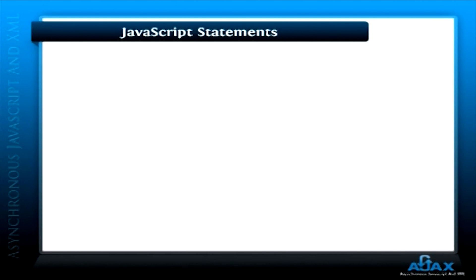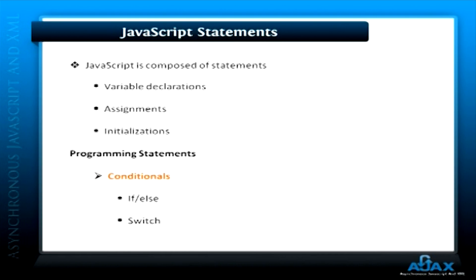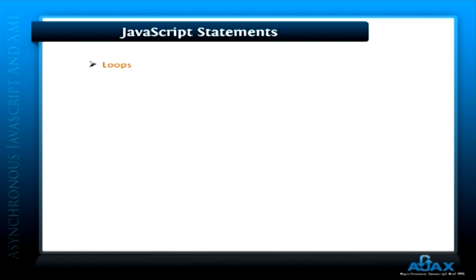JavaScript statements. Our JavaScript is composed of statements. Variable declarations, assignments, and initializations are a few examples of JavaScript statements. We also have a core set of programming statements: conditionals, which include if, else, and switch; loops, such as for and while; and flow control statements.